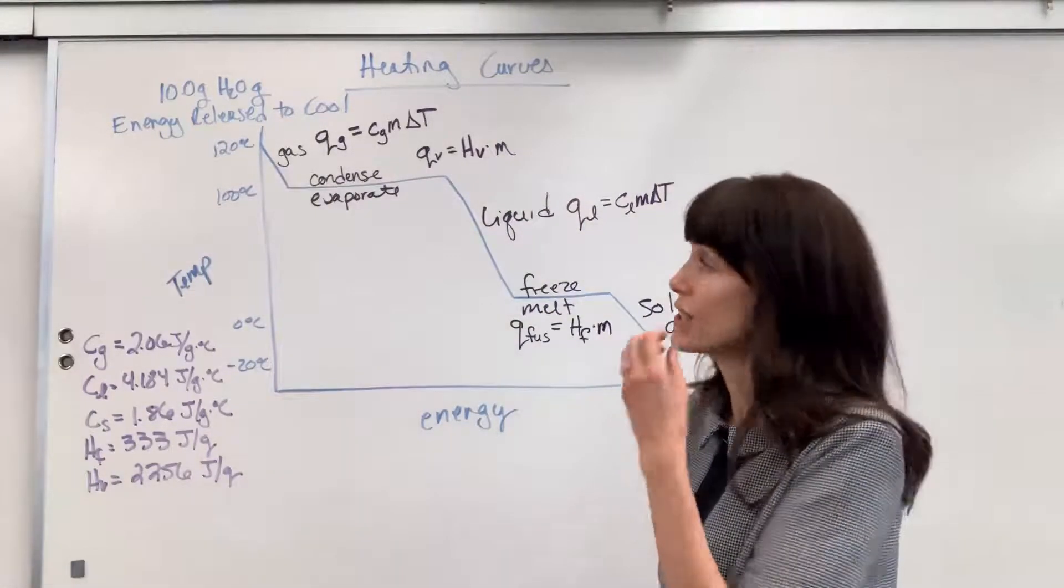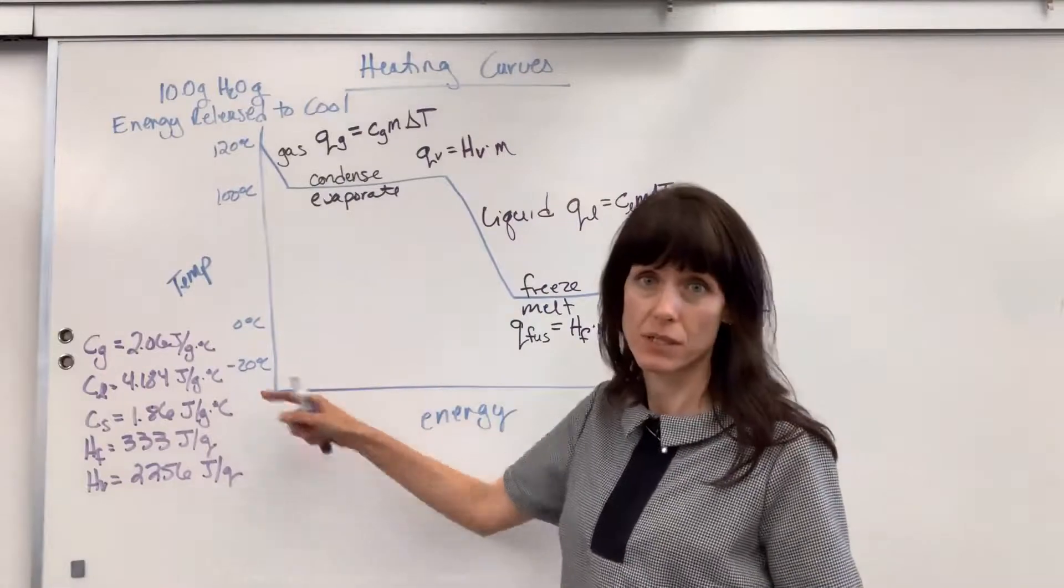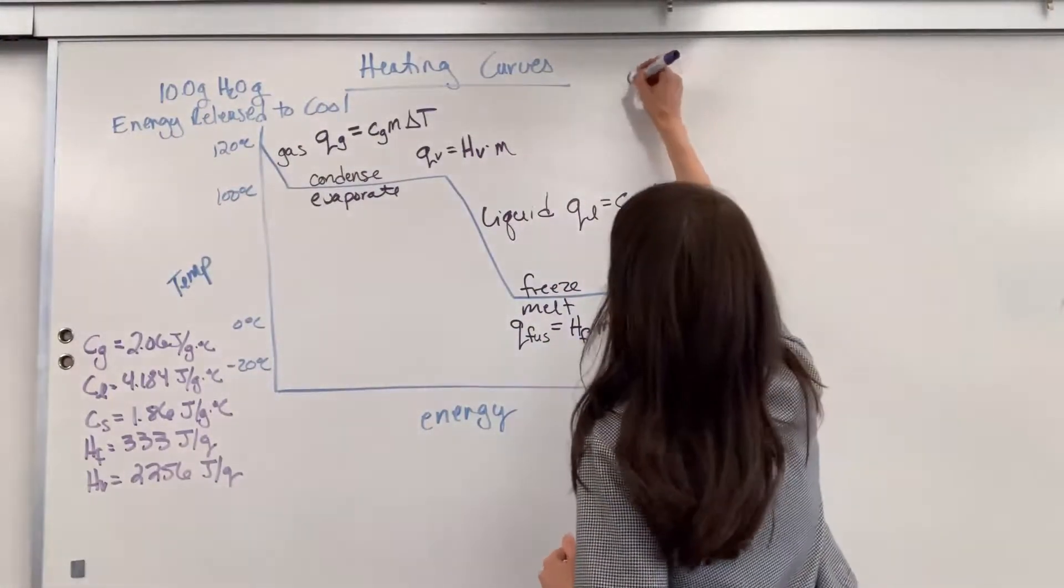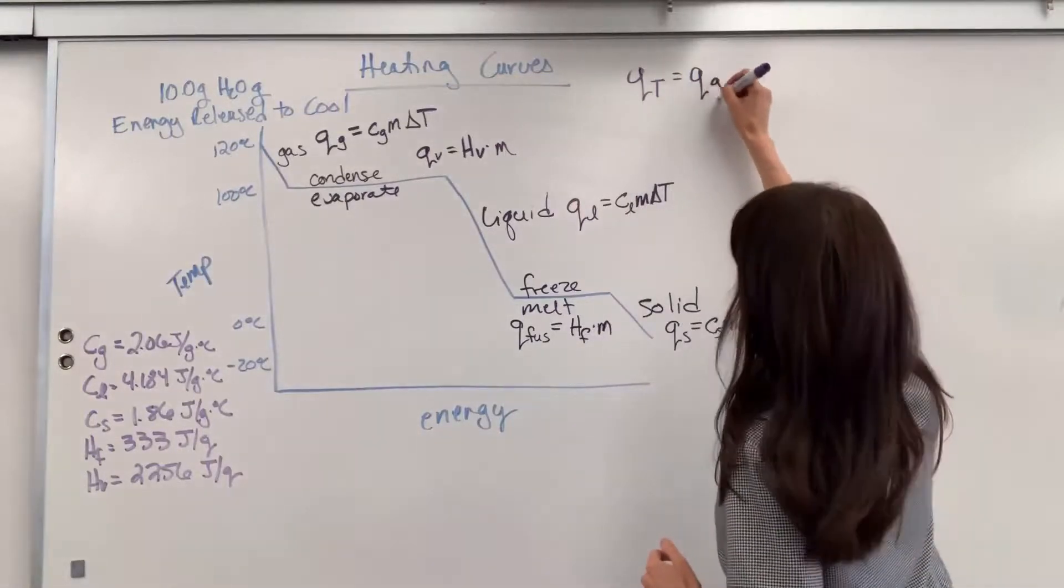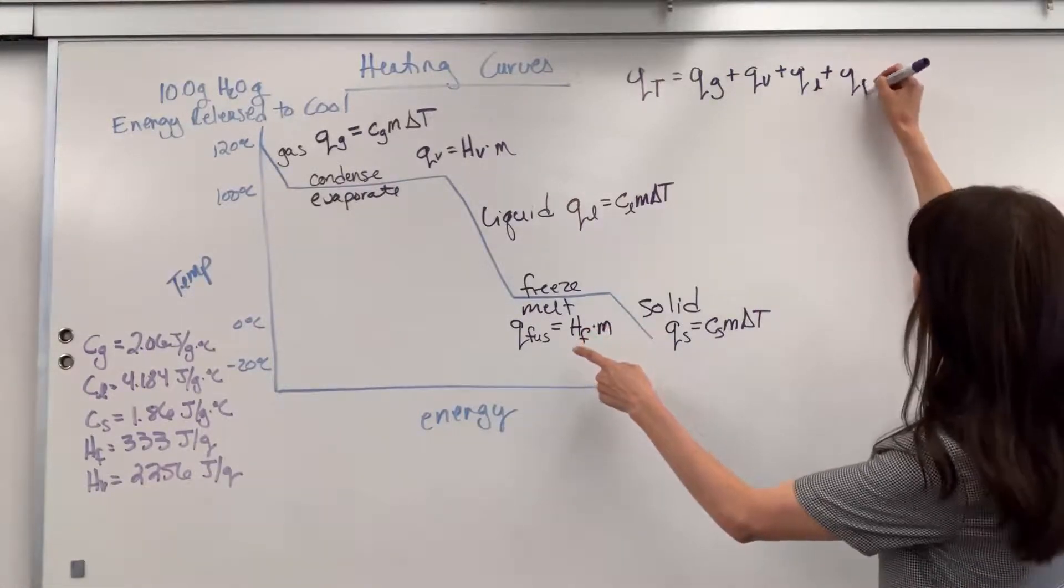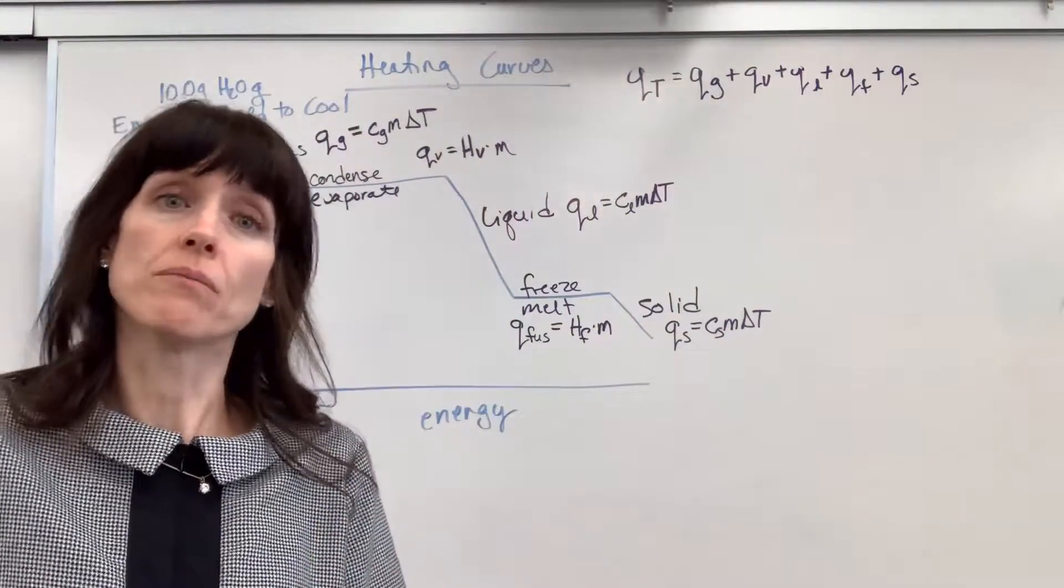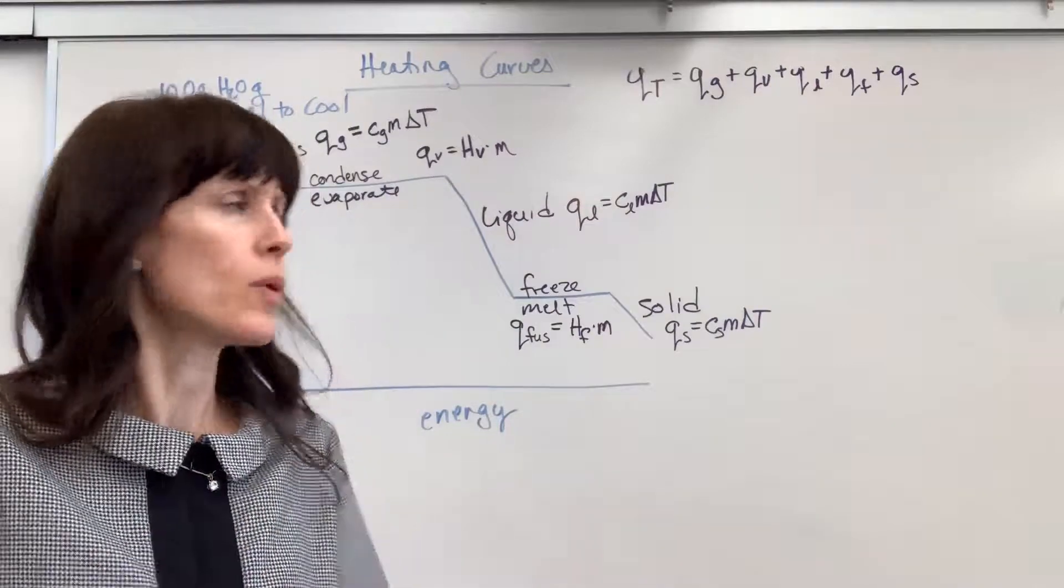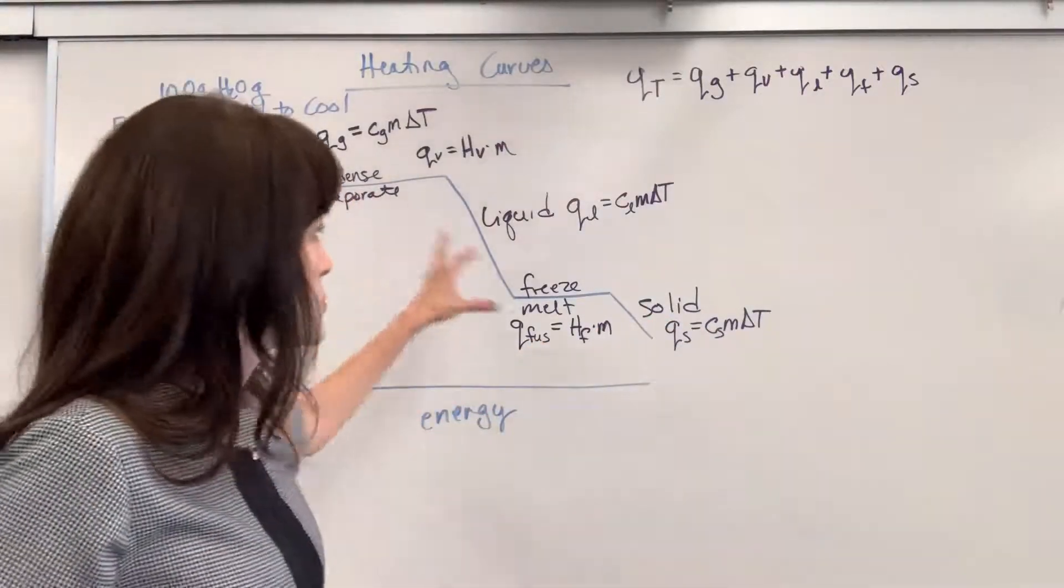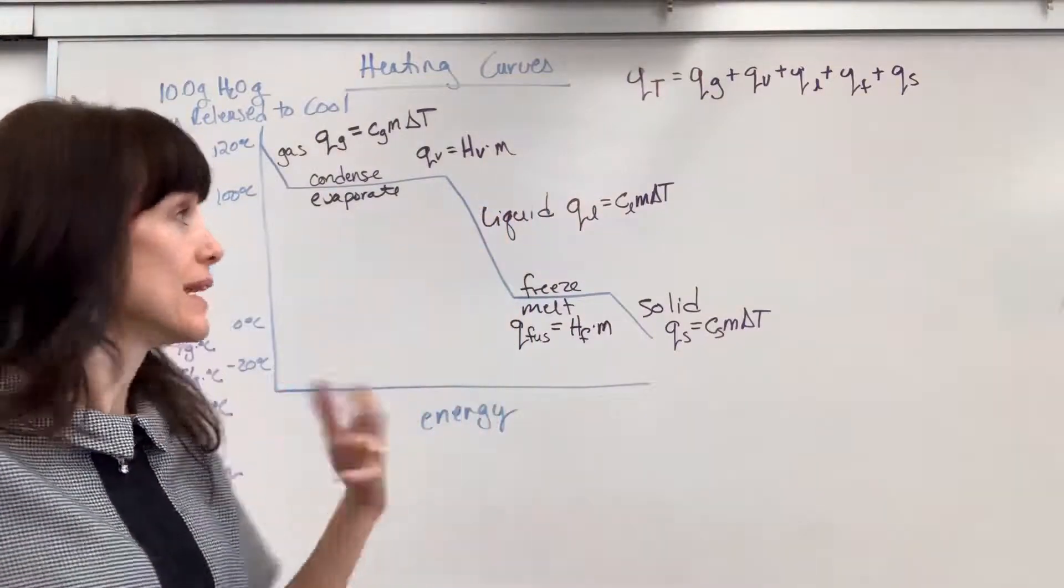So our question is, how much energy is released if I take 10 grams of the water at 120 degrees and I cool it all the way down to negative 20 degrees C? To get that total energy, because there are five different formulas here, we're going to have to add them all together. The total energy will be Q of the gas plus Q of vaporization plus Q of liquid plus Q of fusion plus Q of the solid. We have to do all five of those. Now, you won't always have a problem that's this big. You might melt and then warm up a substance.